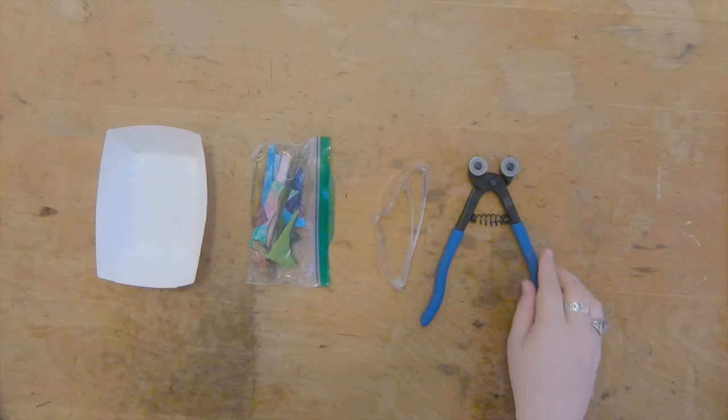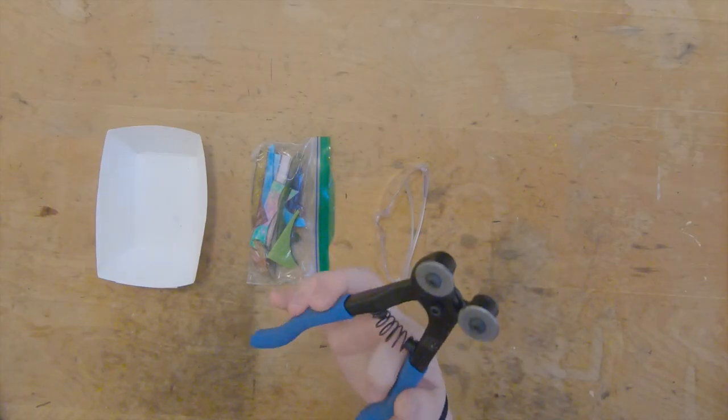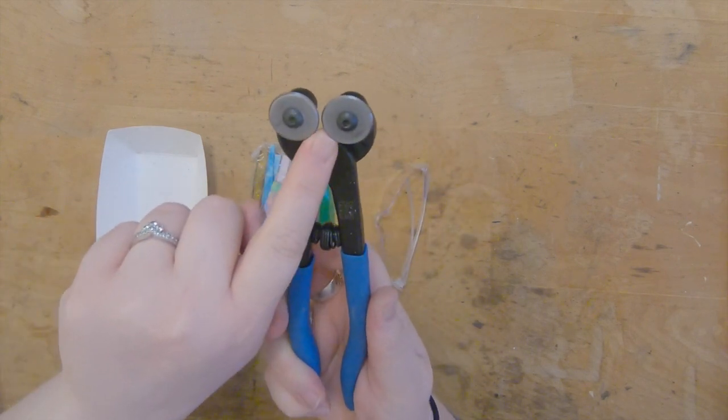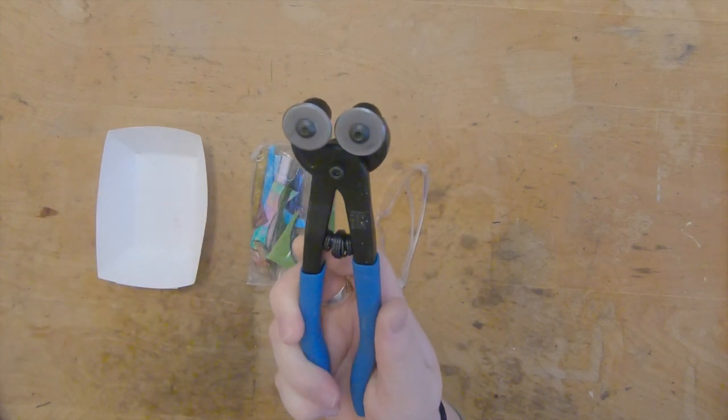First I'm going to go over how to use the nippers. These are double-wheeled nippers. The two wheels here do not touch, they squeeze the glass and break it.